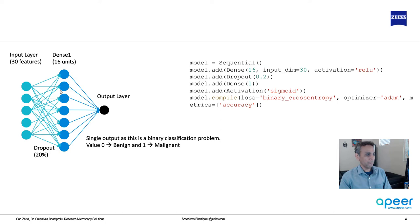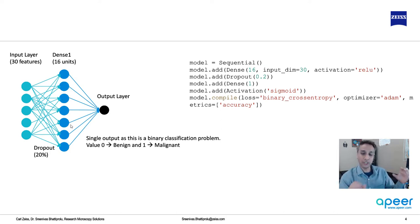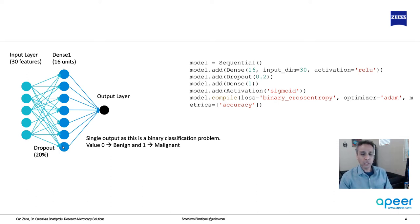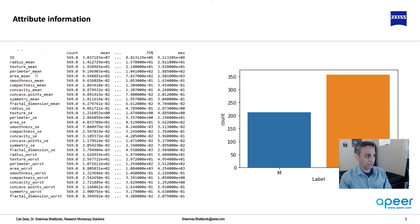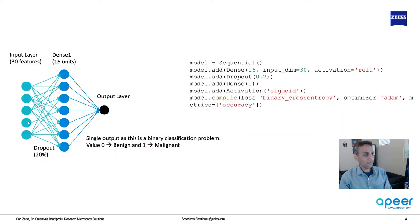I showed you a neural network with many hidden layers in my lecture about what is deep learning. The model we are going to fit will have input — how many features? 30 features, because we have 30 of these features. So 30 features go in and then we have a hidden layer. Let's put 16 units in the hidden layer.